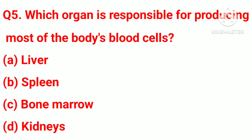Question number 5. Which organ is responsible for producing most of the body's blood cells? Option A, liver. Option B, spleen. Option C, bone marrow. Option D, kidney. Correct answer: Option C, bone marrow.